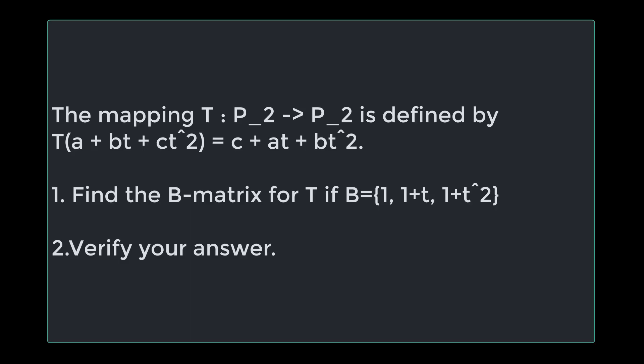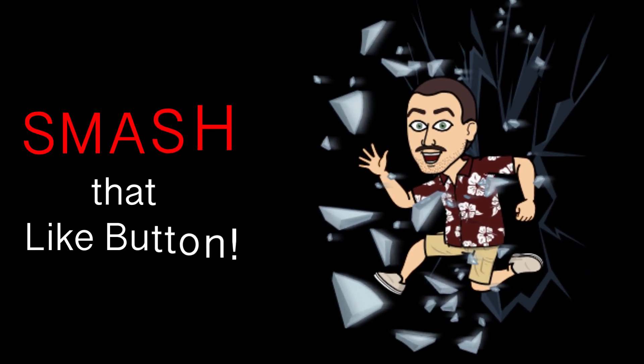The question we're working on today is: the mapping T from P₂ to P₂ is defined by T(a + bt + ct²) = c + at + bt². Find the B-matrix for T if B = {1, 1+t, 1+t²}, and then verify your answer. Smash that like button and let's get started.